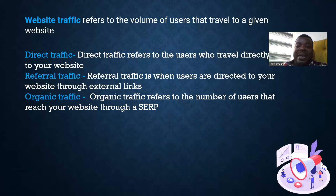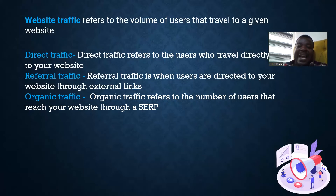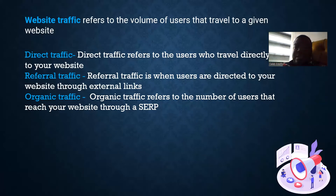Then we have organic traffic. Organic traffic refers to the number of users that reach your website through a search engine SERP — Search Engine Result Pages. Search engines are websites that people go to in order to search for things, and of course the most popular search engine is google.com.